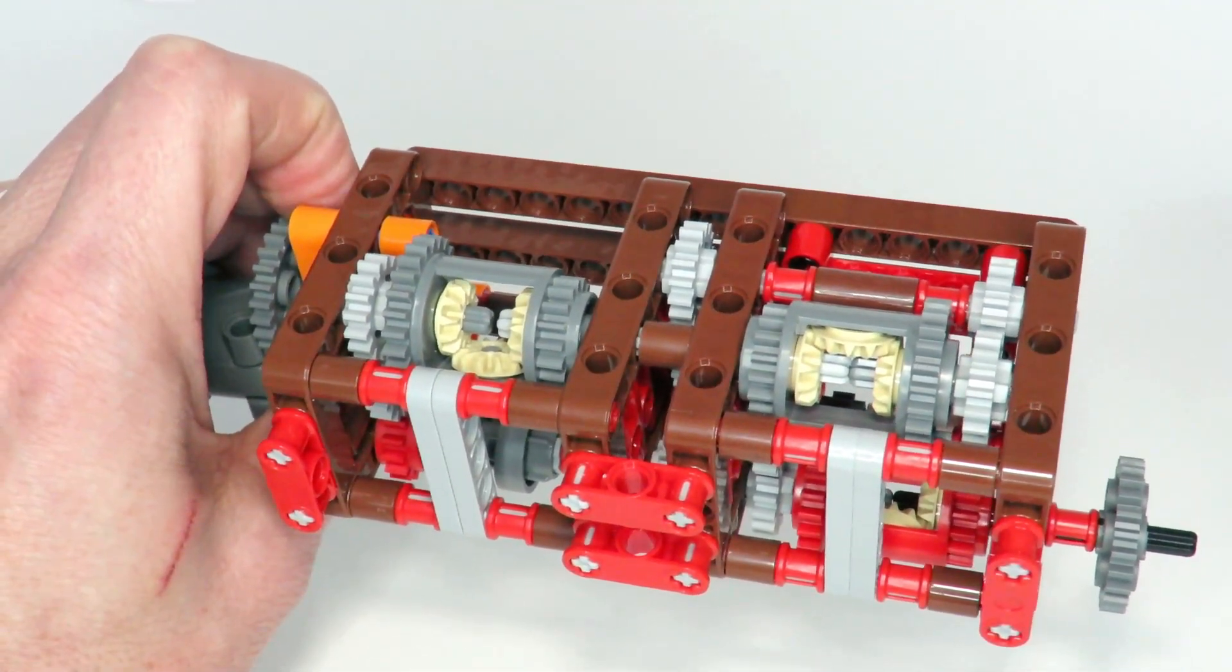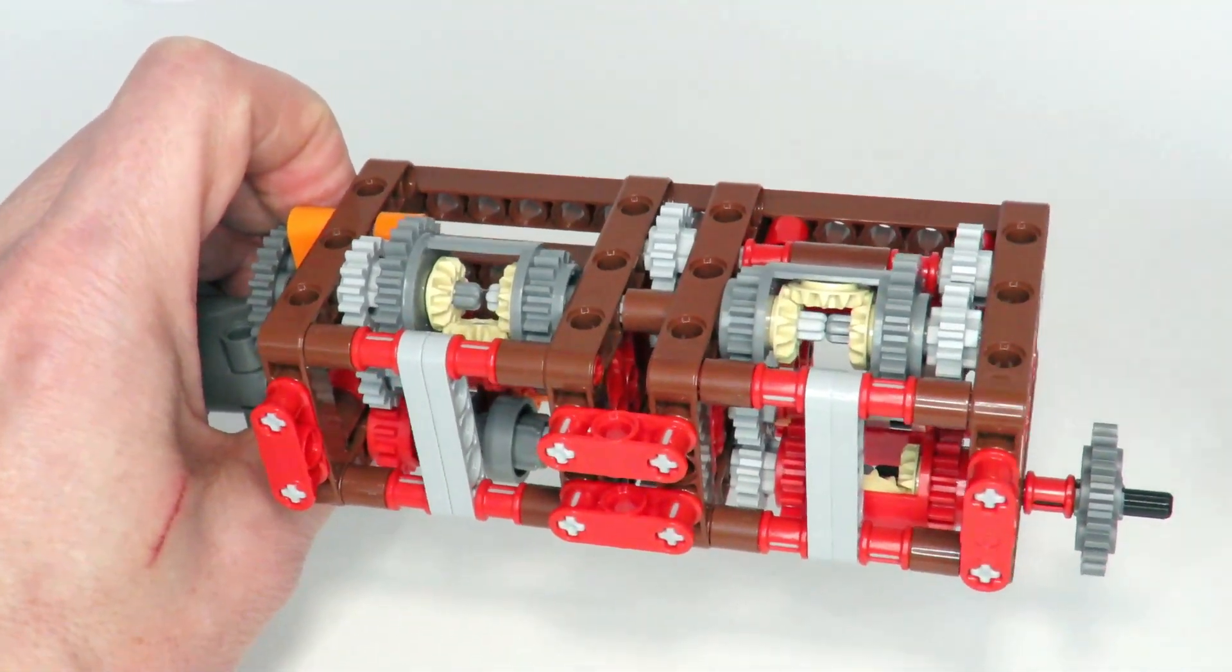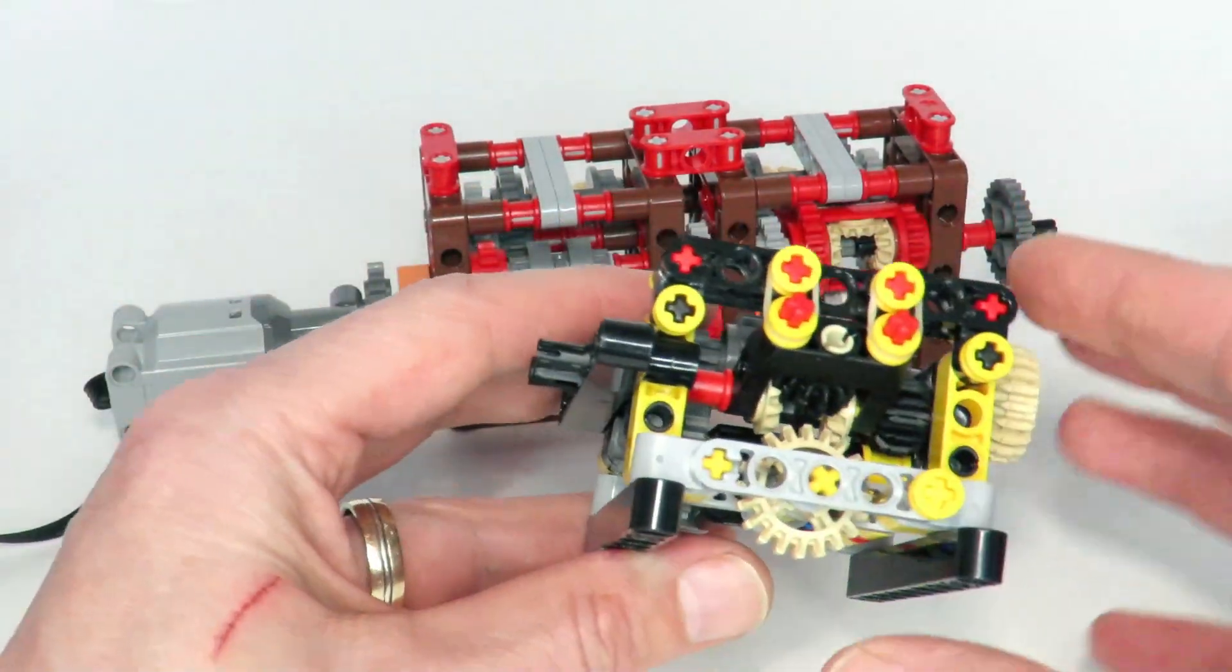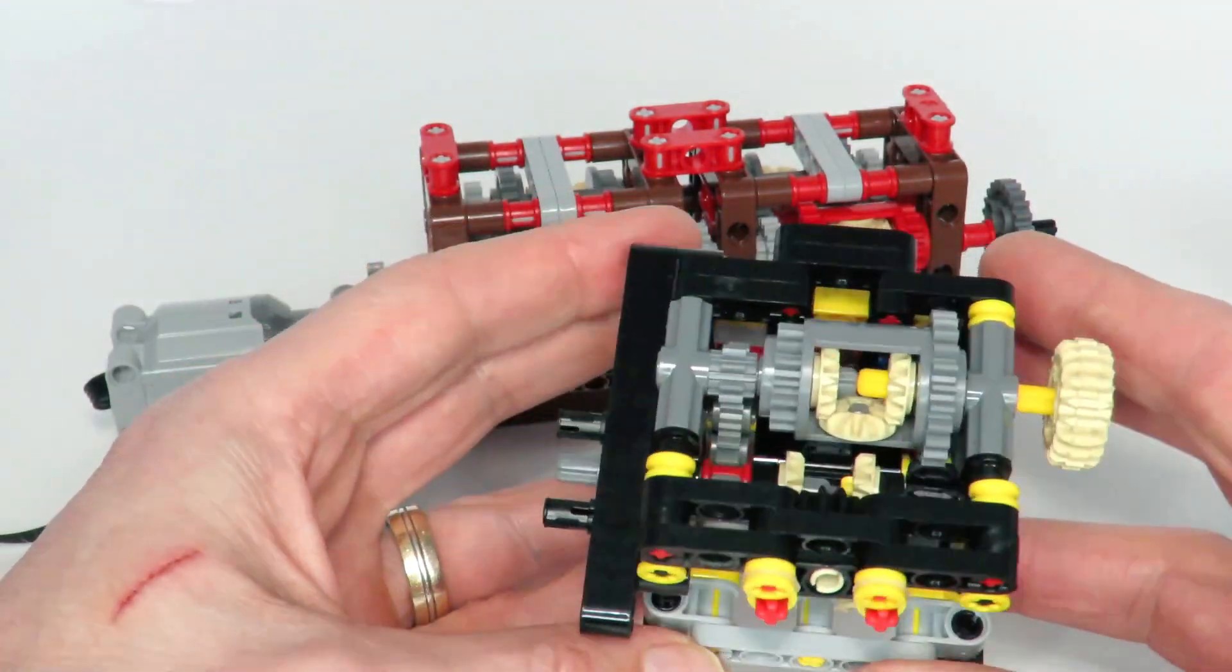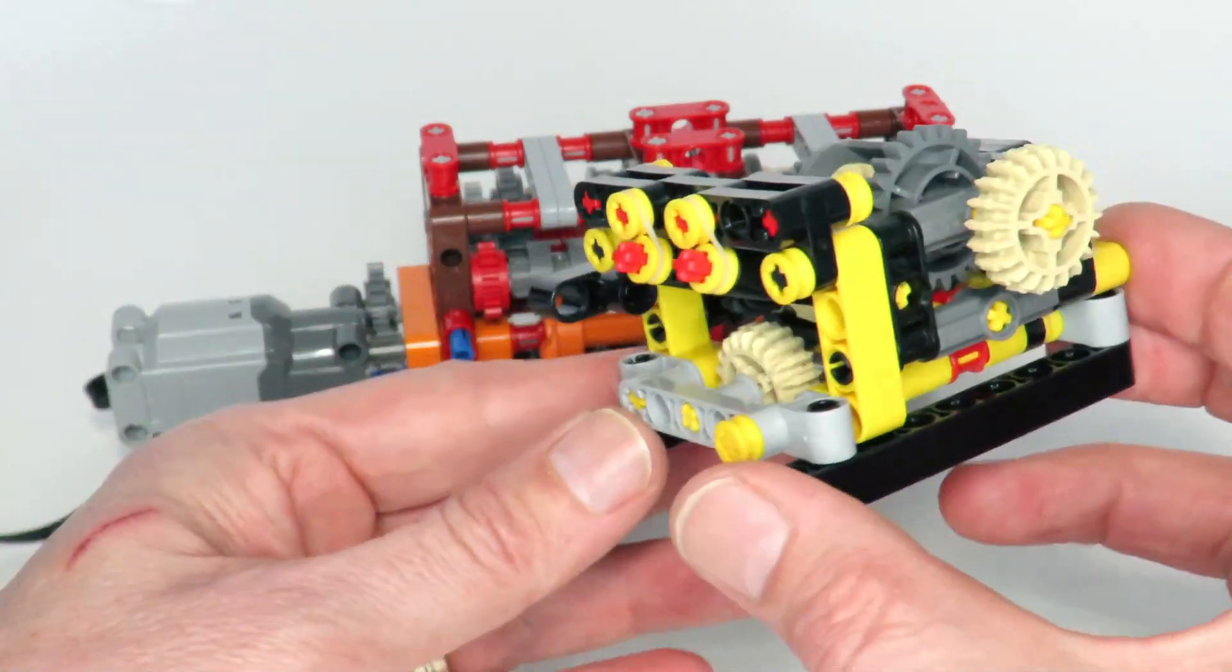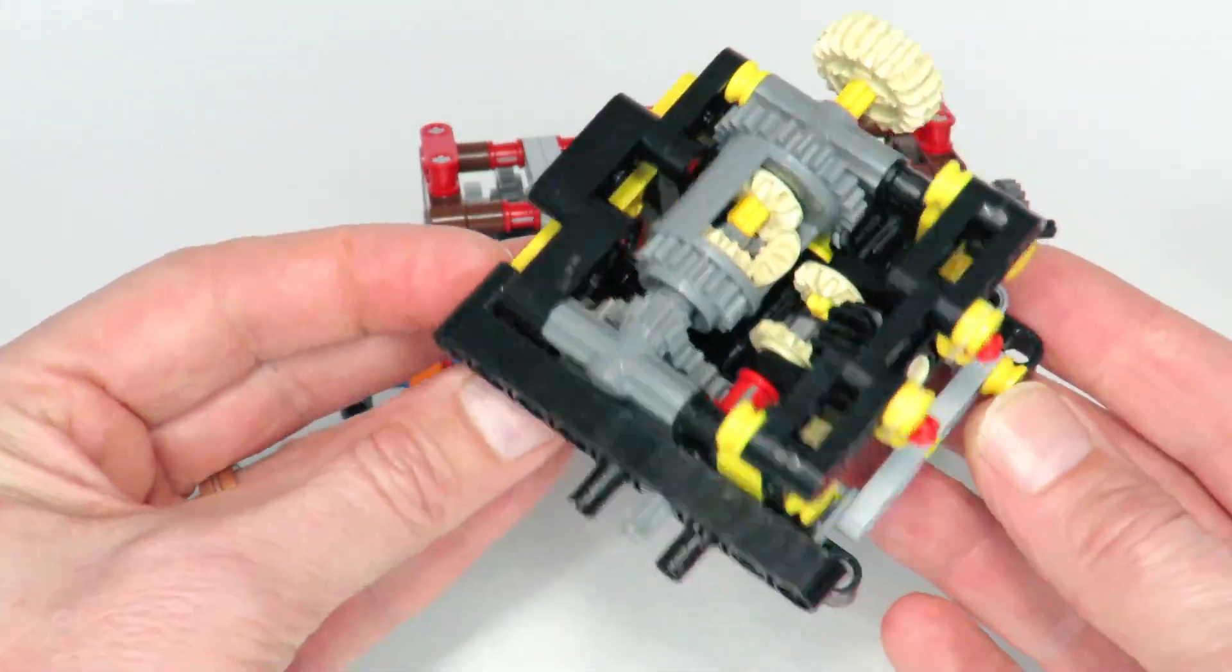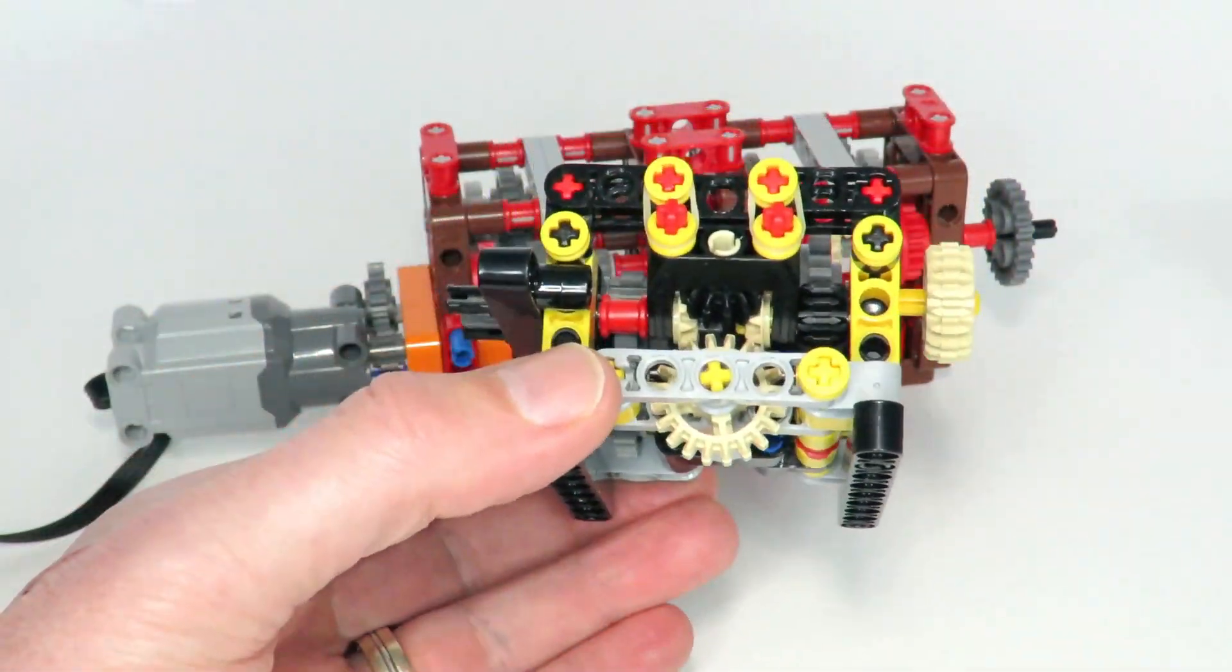And now finally the adder at the end, that differential I haven't actually found a way of reducing that size. I don't know of any other way of adding two speeds without using a differential, so this had to be kept the same. And putting all that together I have managed to create a much smaller more compact automatic gearbox as I've shown in the beginning of the video.